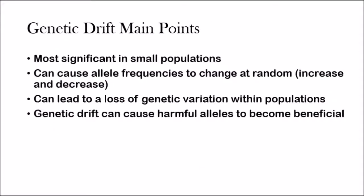Here are the main points for genetic drift, just to recap. It is most significant in small populations. It can cause allele frequencies to change at random — either increase or decrease — making genetic drift an example of microevolution. It can lead to a loss of genetic variation within populations, which is the negative side of genetic drift. However, genetic drift can also cause harmful alleles to become beneficial in some cases.